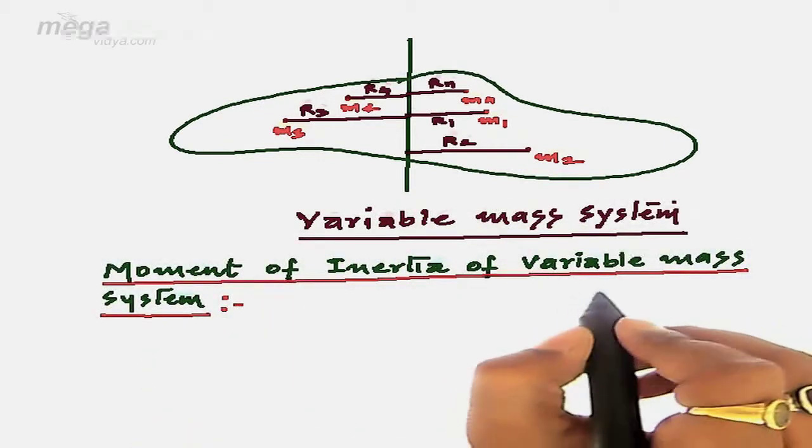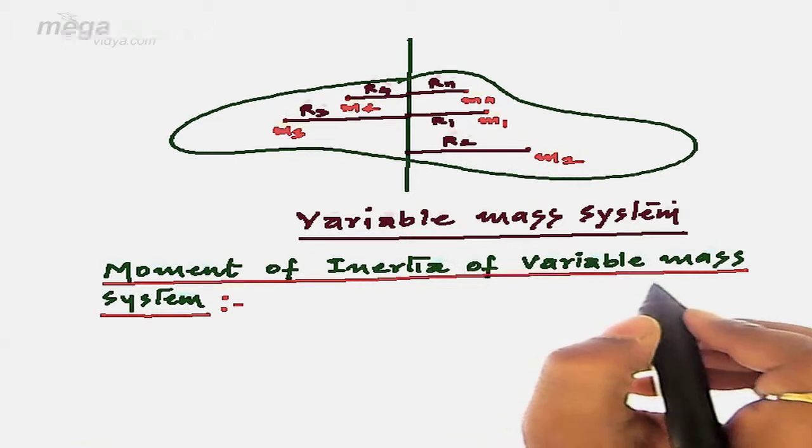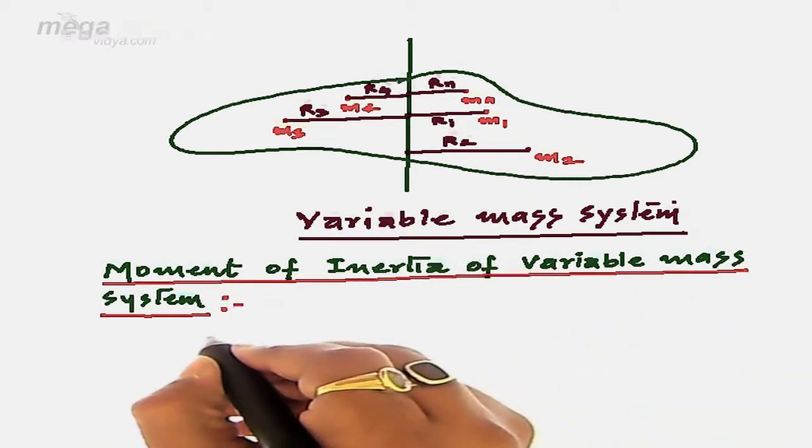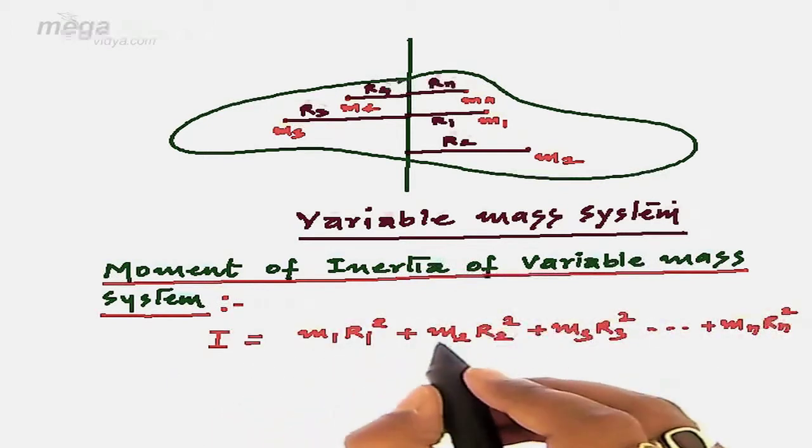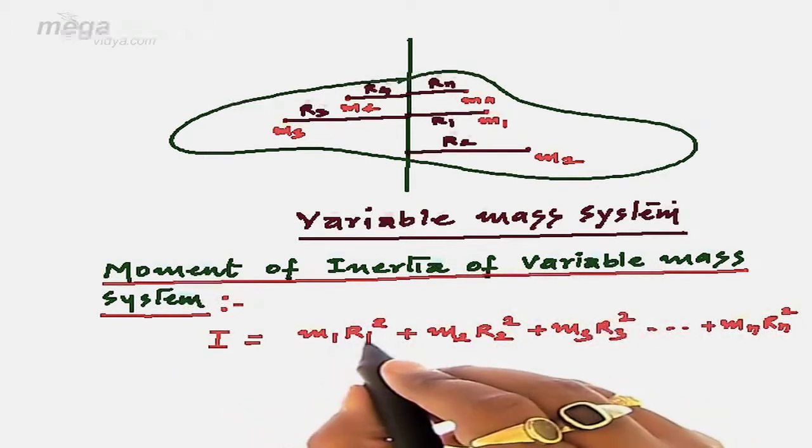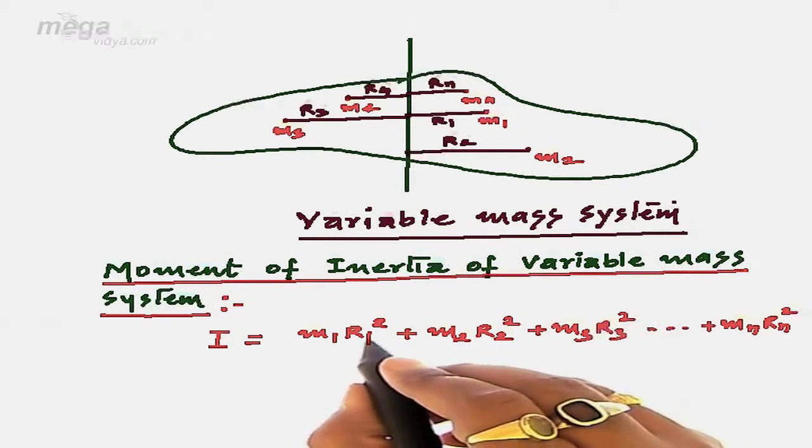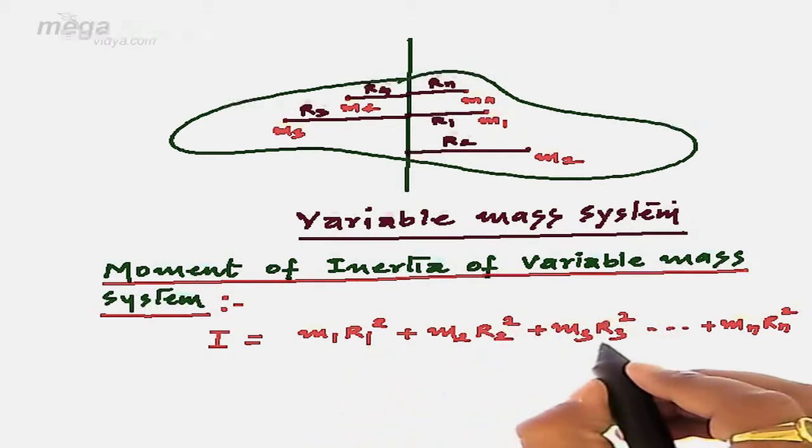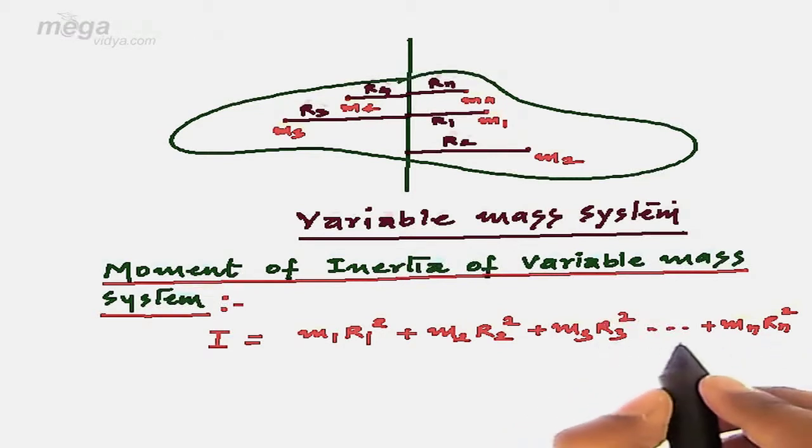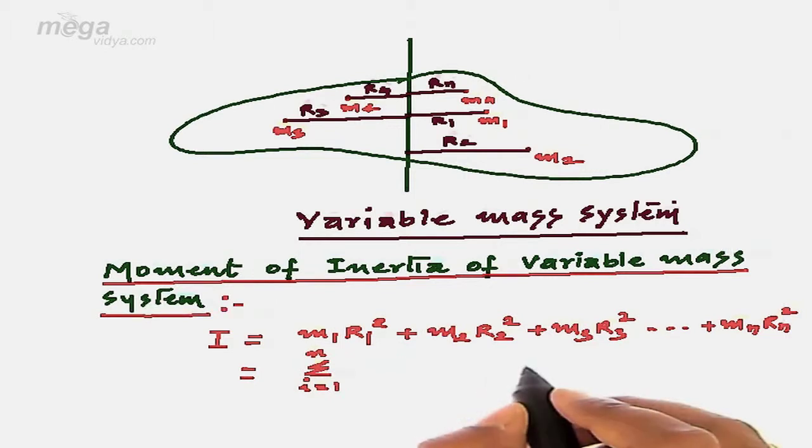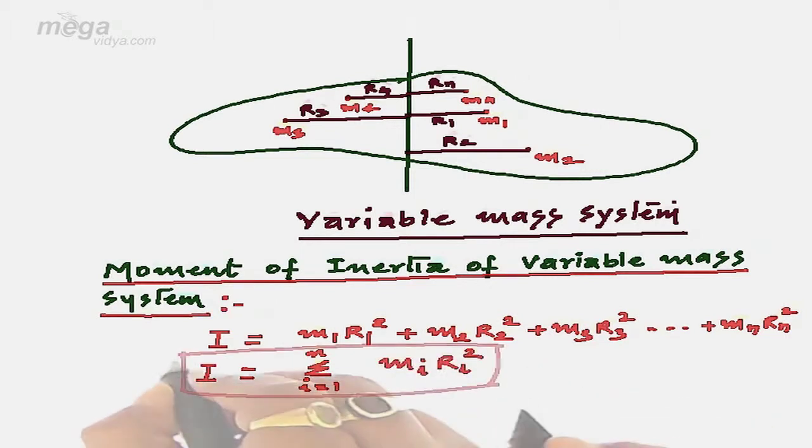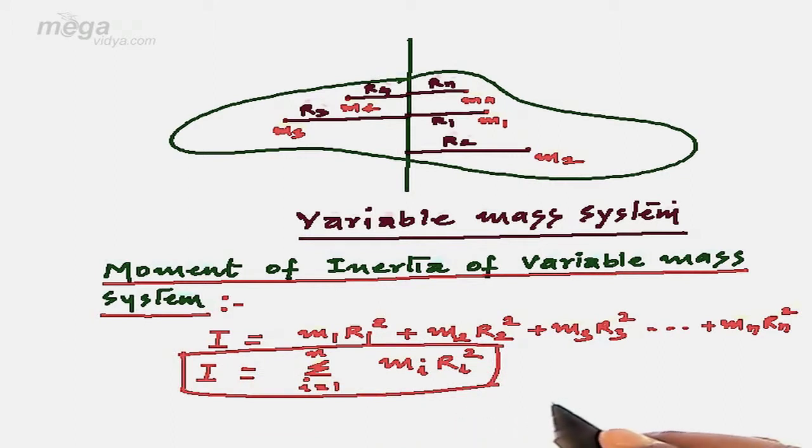Now we are going to calculate the moment of inertia of variable mass system. For variable mass system, the moment of inertia I is given by m1*r1^2, where m1 is the mass of that particle and r1 is the distance of that particle from the axis of rotation, plus m2*r2^2, plus m3*r3^2, going on to mn*rn^2. We are taking the sum of individual moments, which can be given as summation from i=1 to n of mi*ri^2.